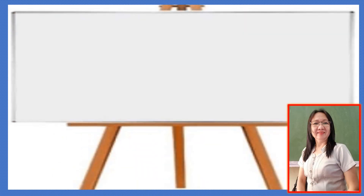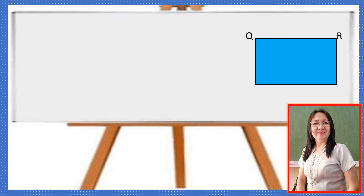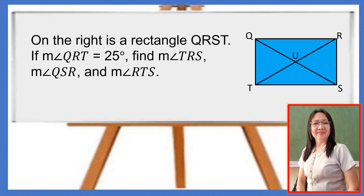To start with, let us have this rectangle. Let us name this as QRST, with RT and QS as the diagonals that intersect at U. If the measure of angle QRT is 25 degrees, we are asked to find the measure of angle TRS, the measure of angle QSR, and the measure of angle RTS.